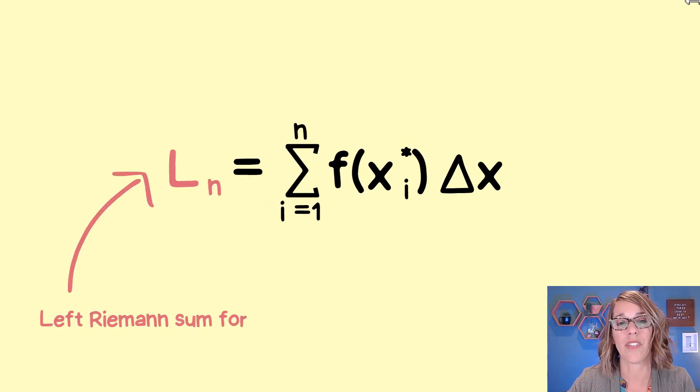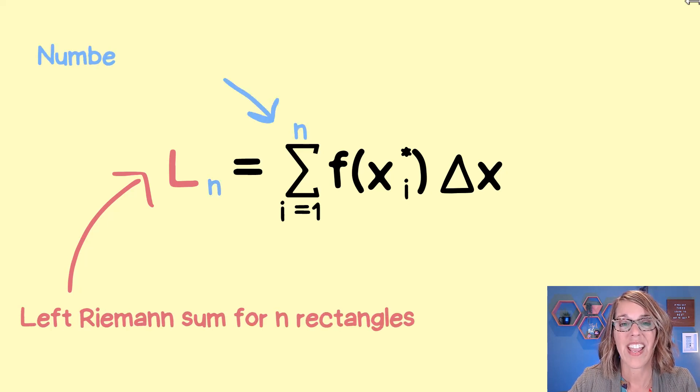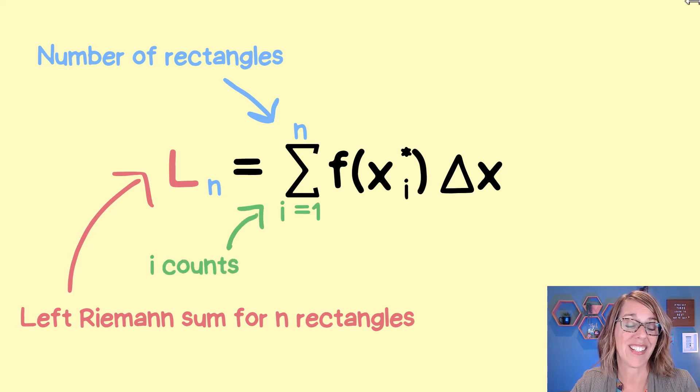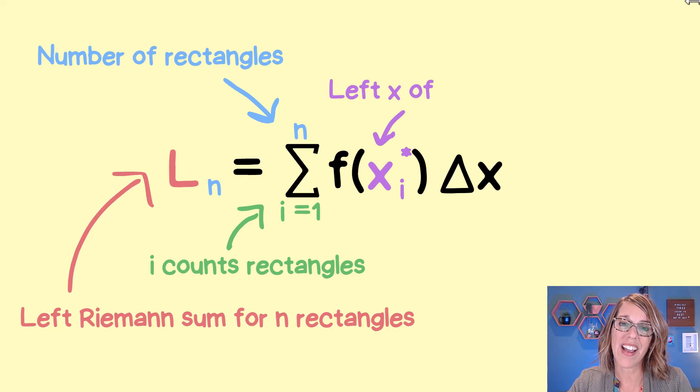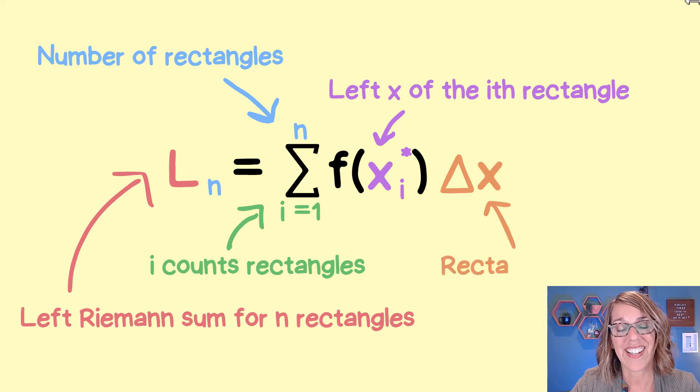n is the total number of rectangles. i is our index, it's counting rectangles for us. x sub i is the endpoint that we're using for that particular rectangle that we're on. And delta x is the width.